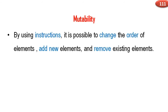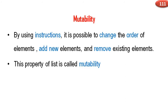Mutability. By using instructions, it is possible to change the order of elements, add new elements, and remove existing elements. This property of a list is called mutability.